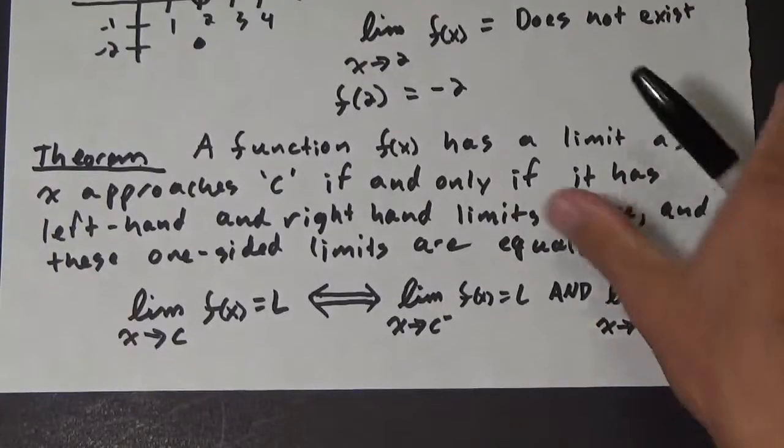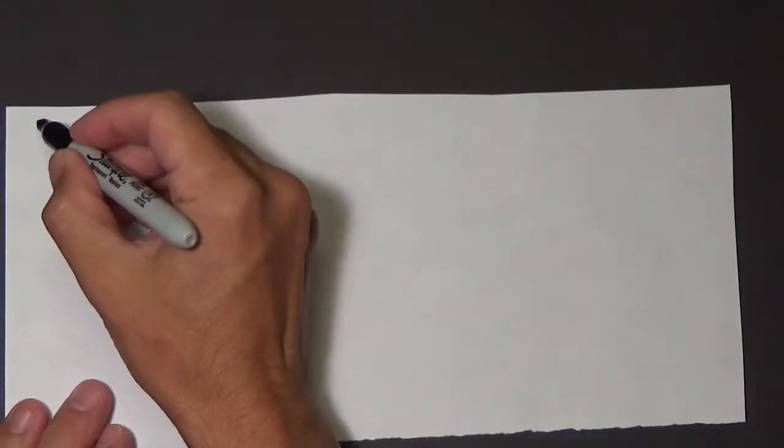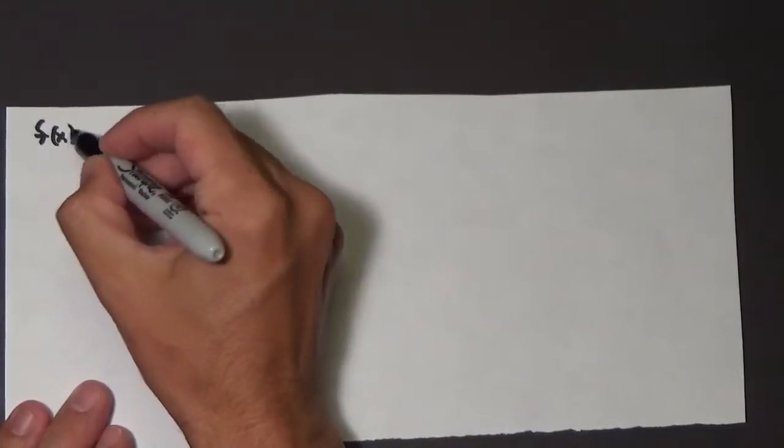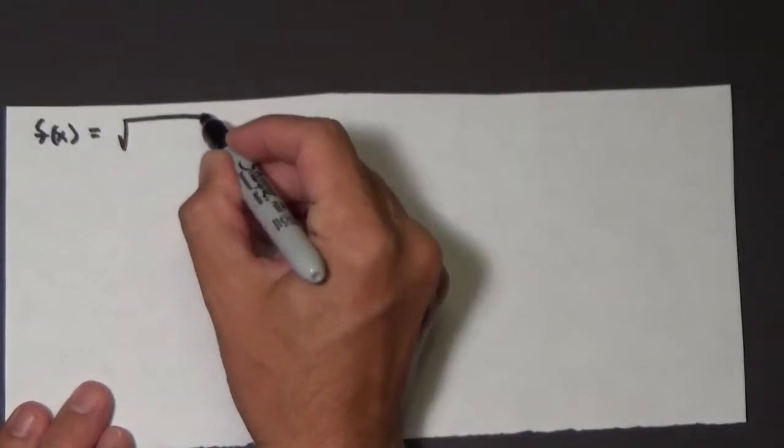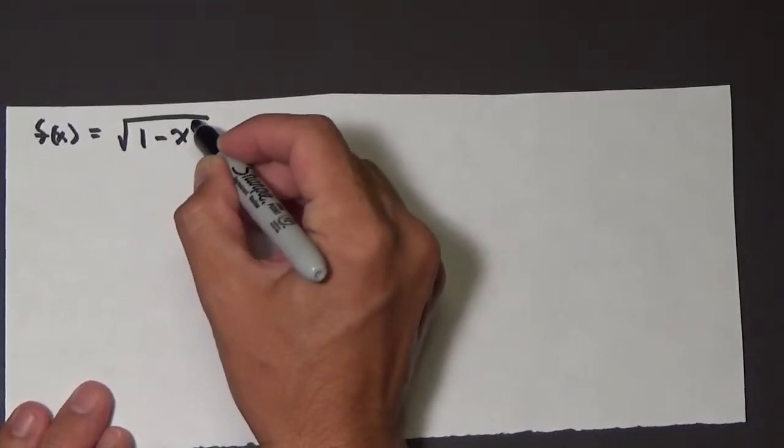Let's take a look at a quick example. Say we have this function here: f(x) equals the square root of 1 minus x squared.